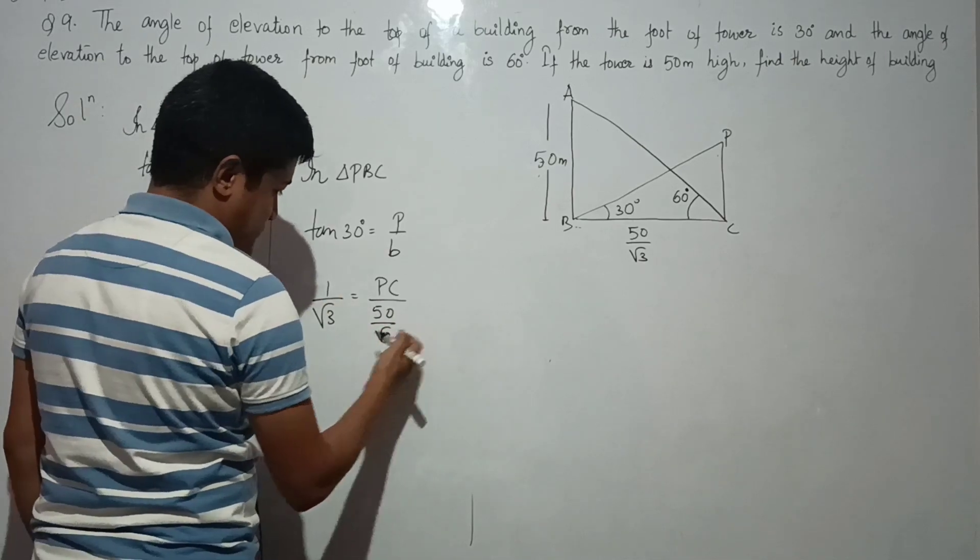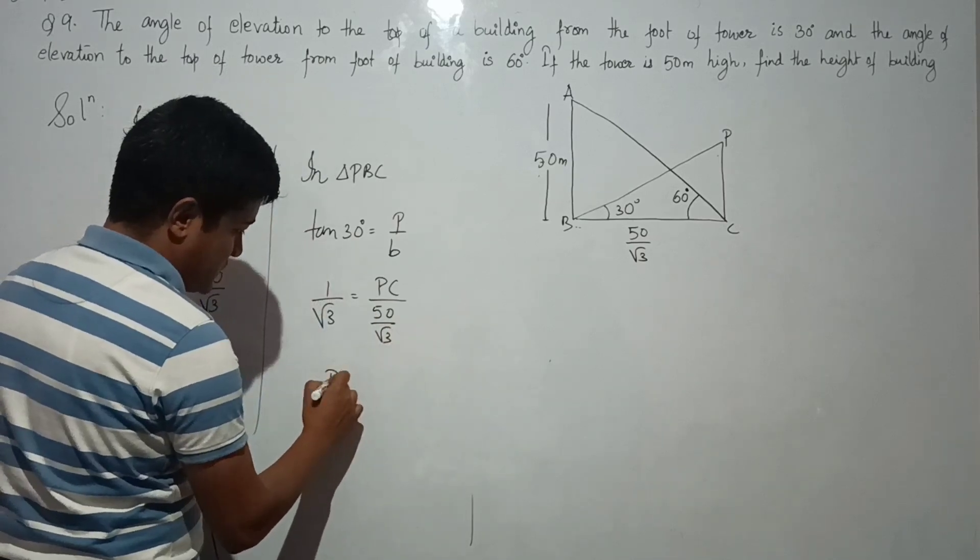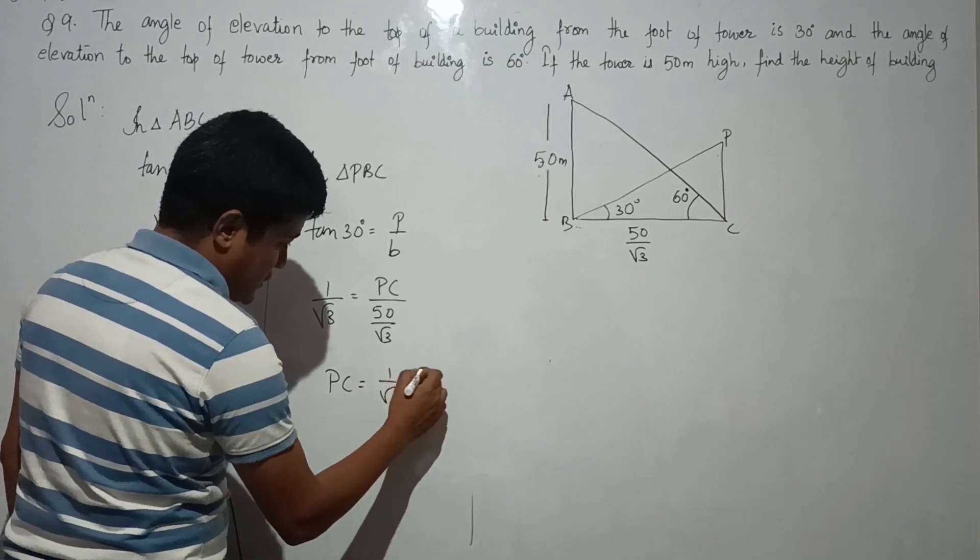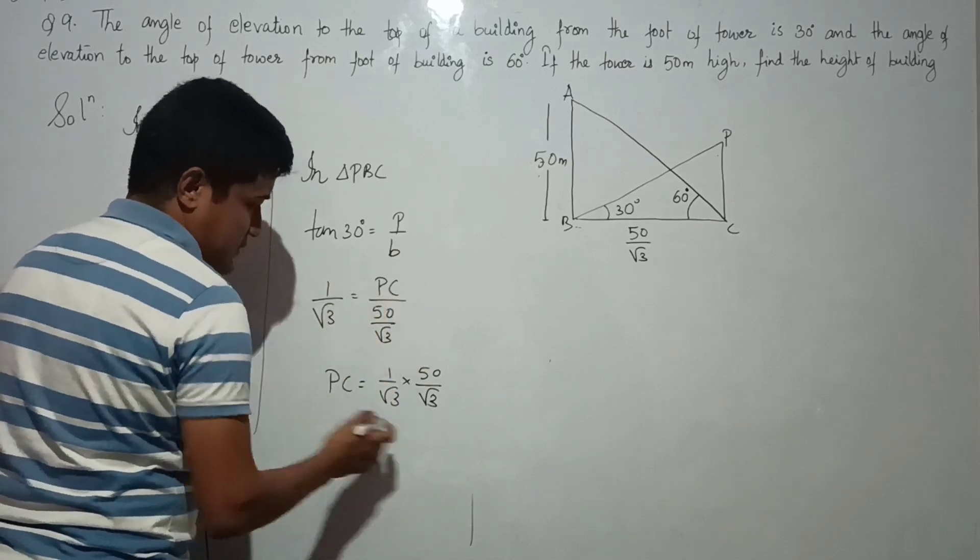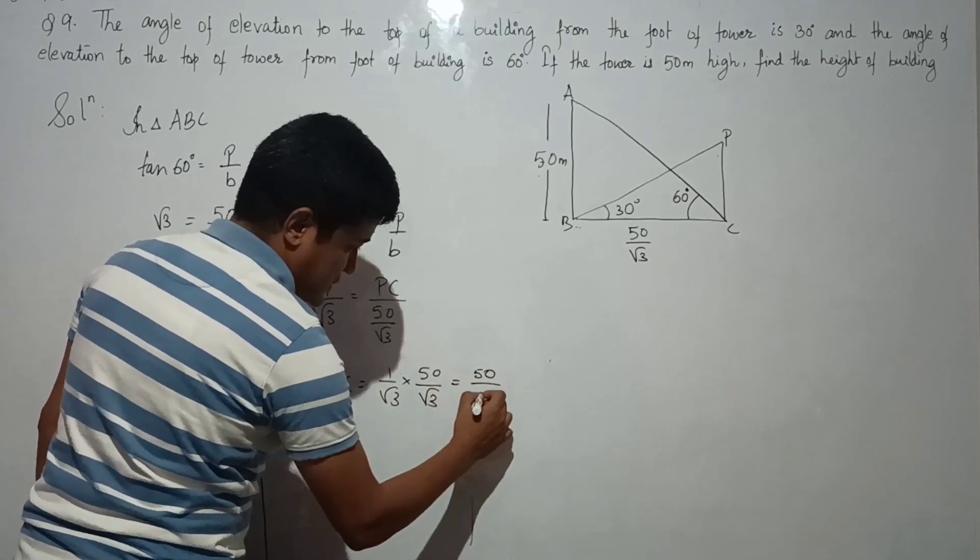the other side. It will be PC equals to 1 by root 3 into 50 by root 3. So 3 and 3 cancel, leaving 50 by 3.